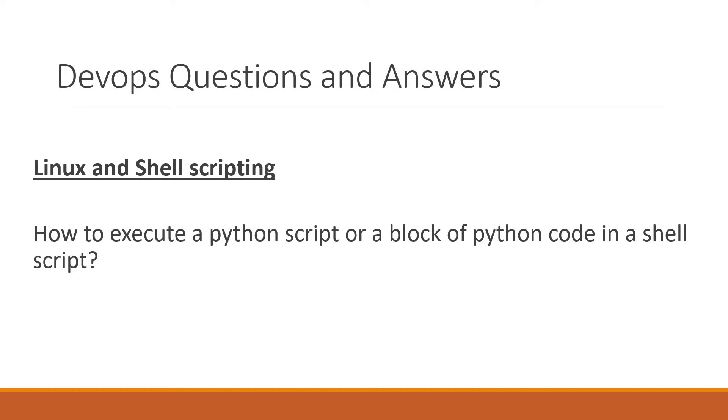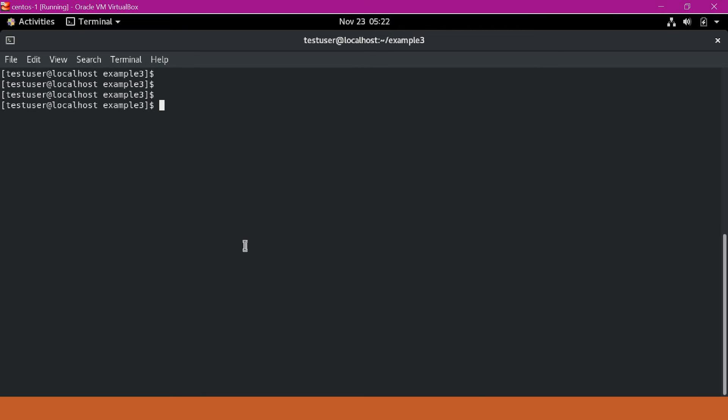In this video, we would see how to execute a Python script or a block of Python code in a shell script. There are two ways of executing a Python program in a shell script. In the first method, we can save the Python program as a file on disk and call that file as part of the shell script execution. In the second method, we can execute the Python program as a block of code using a here document.